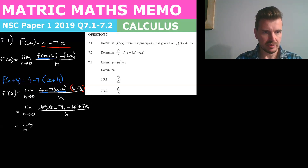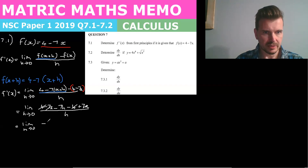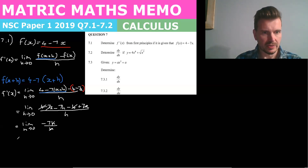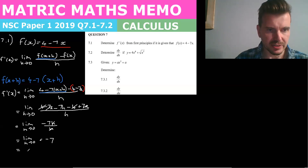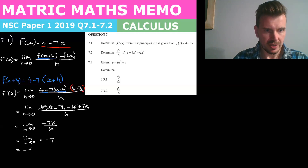Limit as h tends to zero equals negative 7h over h. The h's cancel. And so the limit as h tends to zero equals negative 7. Now we drop the limit — there's no h to substitute zero for, so it still just remains minus 7.